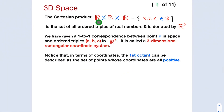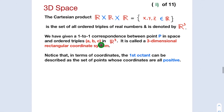The Cartesian product R × R × R is the set of all ordered triples of real numbers, and it's denoted by R³. Each coordinate x, y, z will be a real number. We have a one-to-one correspondence between a point P in space and an ordered triple (A, B, C) in R³. Each ordered triple (A, B, C) represents a point in space, and each point in space has a unique coordinate triple. This is called the three-dimensional rectangular coordinate system. Note that in terms of coordinates, the first octant can be described as the set of points whose coordinates are all positive.